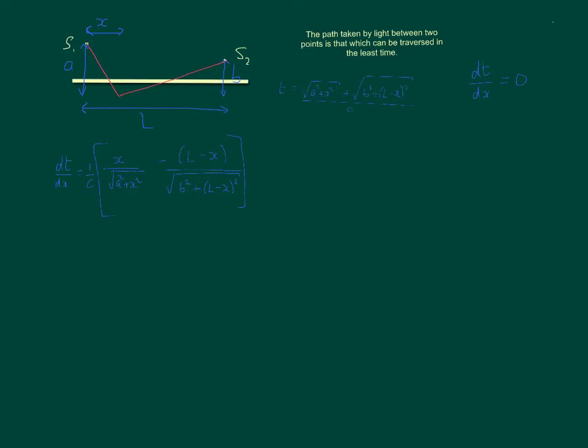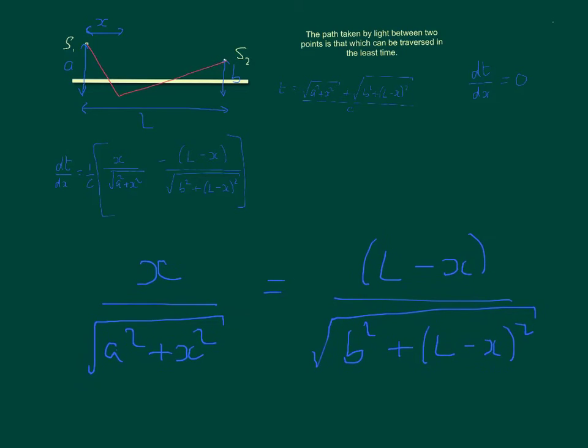Or written out, in other words, we're going to be asking that x over a squared plus x squared square rooted is equal to l minus x over b squared plus l minus x all squared square rooted. Now, this is an important equation, because let's just stop and take stock of what we've done. We've let light go from s1 to s2 via the mirror, taking any old arbitrary path whose horizontal distance from s1 was x. We found an expression for the amount of time that would take. We then differentiated that expression, and we got this. And setting that equal to 0, we got the condition that x must obey now this equation. If x obeys this equation here, in other words, whatever value of x satisfies this equation, tells us the exact point on the mirror that the light has to go through for it to take the least amount of time to get from s1 to s2.